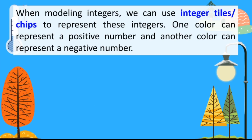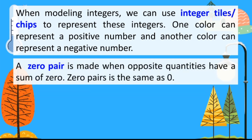When modeling integers, we can use integer tiles or chips to represent these integers. One color represents a positive number and another color can represent a negative number. In our lesson today, we will use integer tiles and number line to visualize the addition of integers. For integer tiles, the blue tiles represent positive numbers and the red tiles represent negative numbers. A zero pair is made when opposite quantities have a sum of zero. Zero pairs is the same as zero. Blue and red tiles are opposite quantities and their sum is zero, so they are called zero pairs.